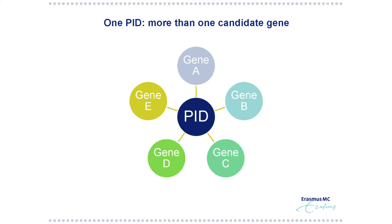It's important to realize that for one PID, there's not only one candidate gene. There can be one clinical presentation that can be caused by genetic defects in multiple different genes. So that also complicates diagnostics, because if you have a clear clinical phenotype, there can be more genetic defects in different genes.